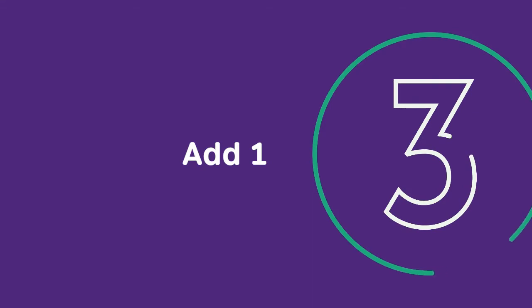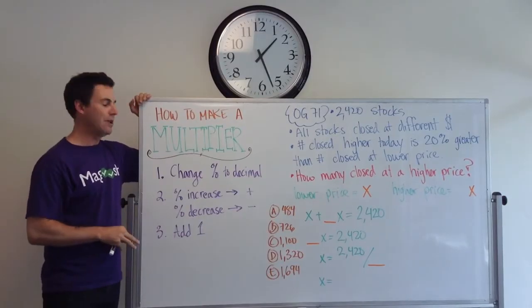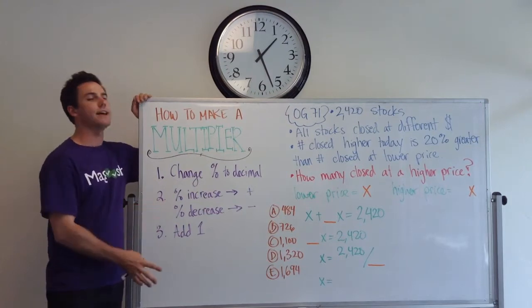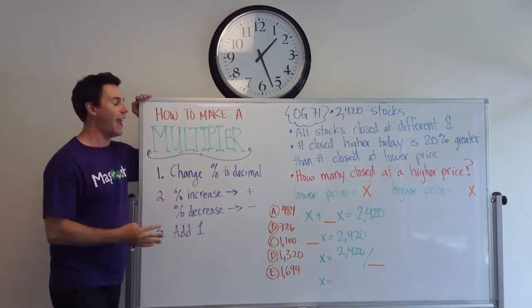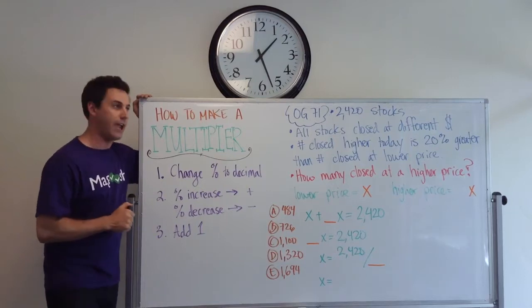Third step, add one. That's it. That's all you have to do to make a multiplier. So this is the process. Let's put it to work with an actual problem from the official guide.